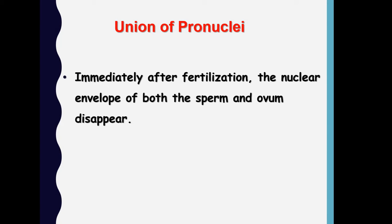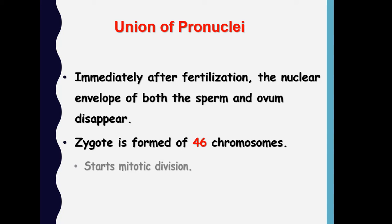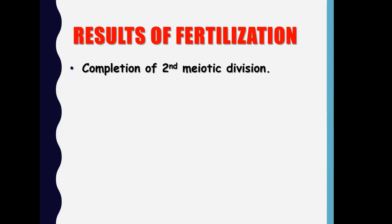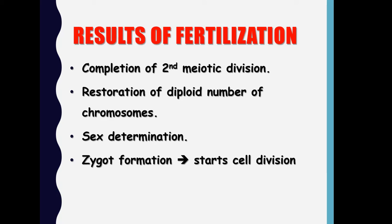Immediately after fertilization, the nuclear envelope of both the sperm and the ovum disappear and a zygote is formed containing 46 chromosomes, and mitotic division of this zygote starts immediately. To summarize the results of fertilization: first, there is completion of the second meiotic division of the egg; there is restoration of the diploid number of chromosomes after fusion of the two pronuclei; sex is determined; the zygote is formed; and cell division begins.